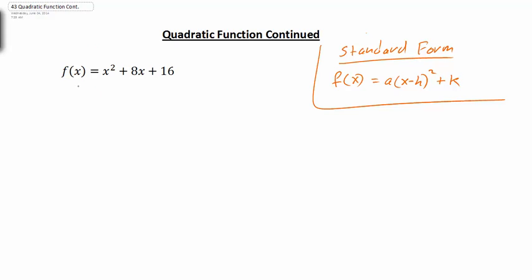Now what happens if we have the function f(x) = x² + 8x + 16? How can we write this in standard form? This is a perfect square trinomial. If we factor it, x times x is x², and for 16 we write 4 times 4 — both positive — so we can write this function as (x + 4)².